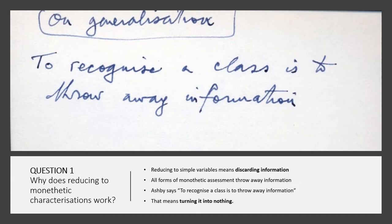But actually behind Ashby's statement is that the stuff that we throw away, effectively we make it disappear. We turn it into nothing. So the ability to turn things into nothing sits behind our ability to reduce messiness and complexity to simple variables.